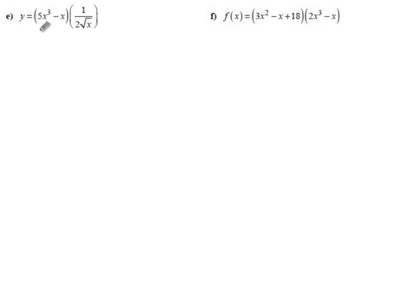Okay, more products. 5x³ minus x, I'm fairly happy with. 1 over 2√x is the same as 1/2, that's the coefficient, and then we have x to the minus because it's in the denominator, and 1/2 because it's square rooted.